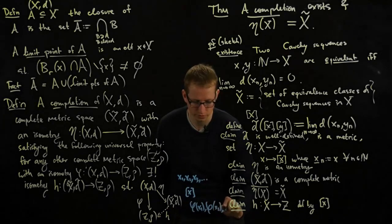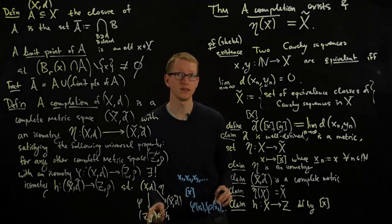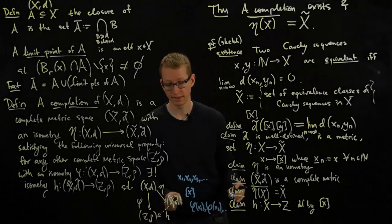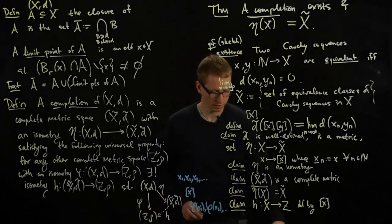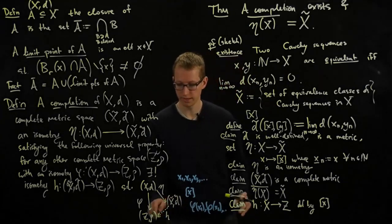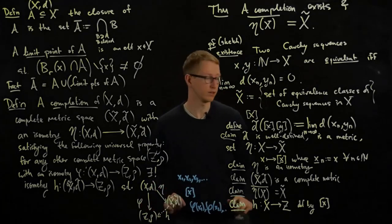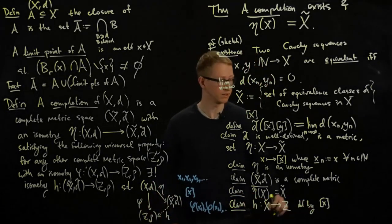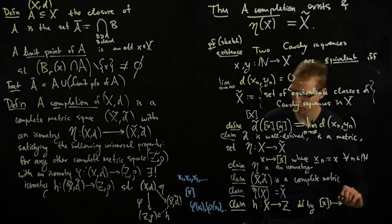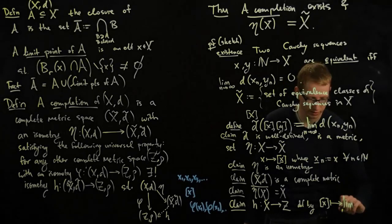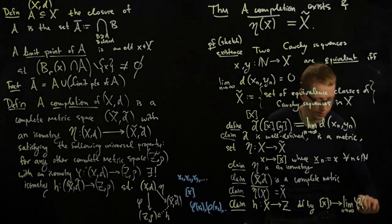Let me write the next one. x2, and so on. That gives me a sequence in z. phi, the claim is that that sequence is actually Cauchy. That's the first thing. And not only that, that sequence converges to something, because this is complete. So it's defined by sending x to the limit as n goes to infinity of phi x_n.